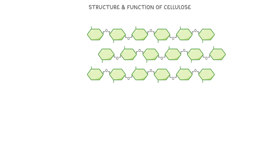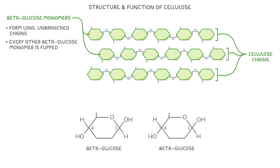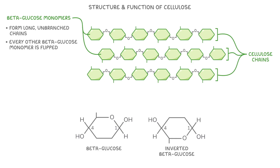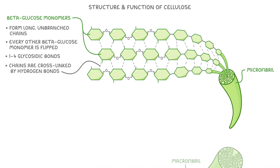Now let's explore the structure and function of cellulose. Unlike starch and glycogen, cellulose is made from beta-glucose monomers that form long, unbranched chains — each line on the diagram represents a different cellulose chain. Every second beta-glucose monomer is flipped upside down. This is because if they were both the same way up, the hydroxyl groups on carbon-1 and carbon-4 would be too far apart to react. Flipping alternate monomers brings the hydroxyl groups close enough to form a 1,4-glycosidic bond. These straight cellulose chains are also cross-linked by hydrogen bonds, which hold them together to form a strong bundle called a microfibril, and several microfibrils group together into a macrofibril.